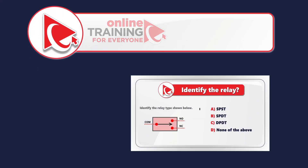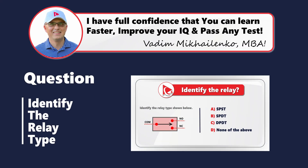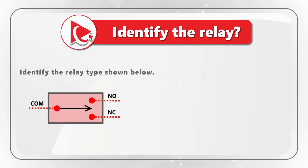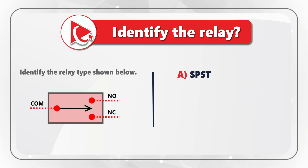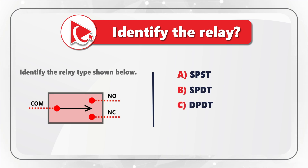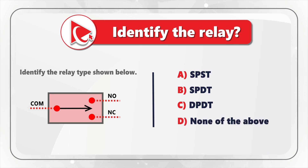Here's an amazing question where you need to identify the relay type shown. You are presented with a relay and need to identify its type — one out of four possible choices. Choice A: SPST. Choice B: SPDT. Choice C: DPDT. And last but not least, Choice D: none of the above.